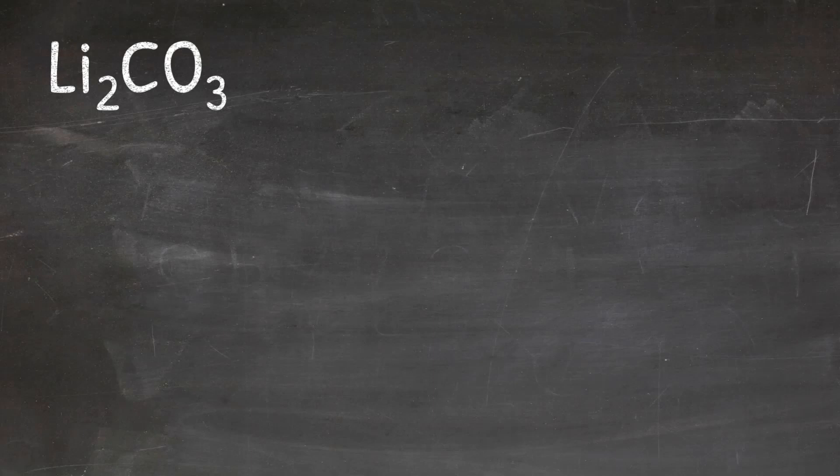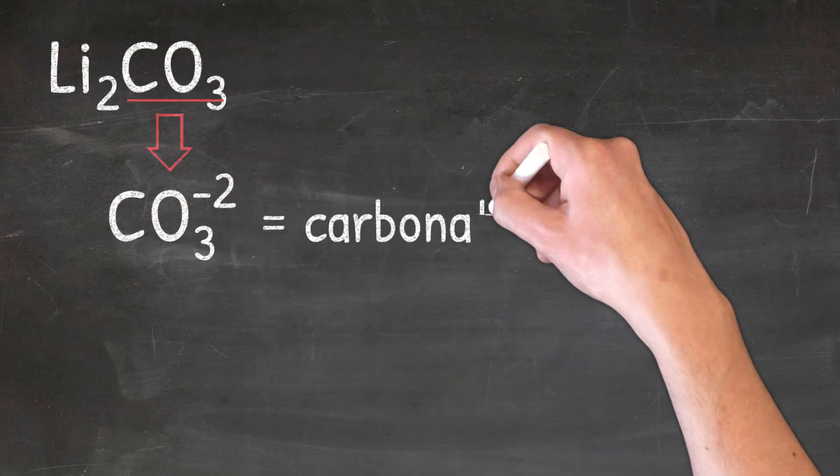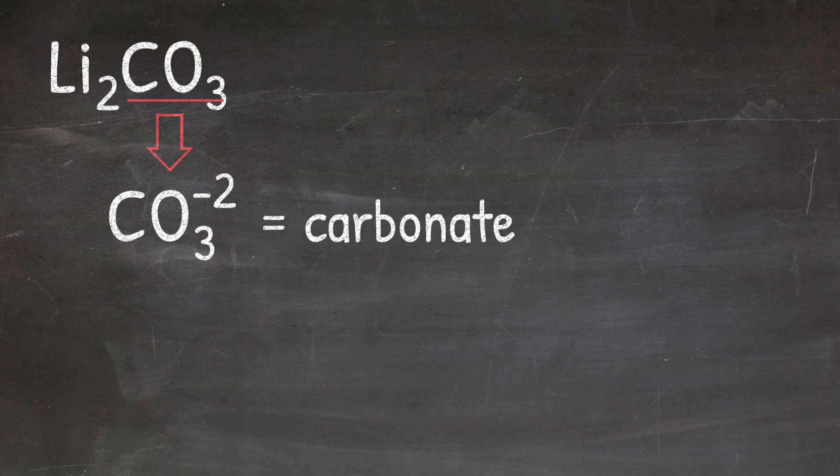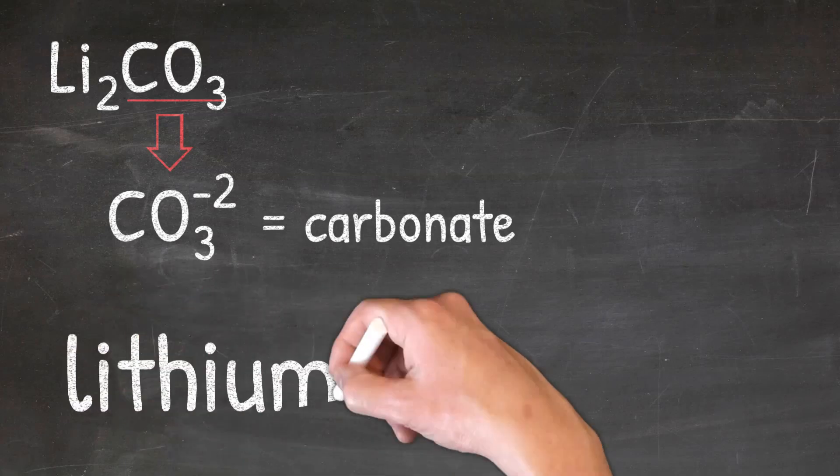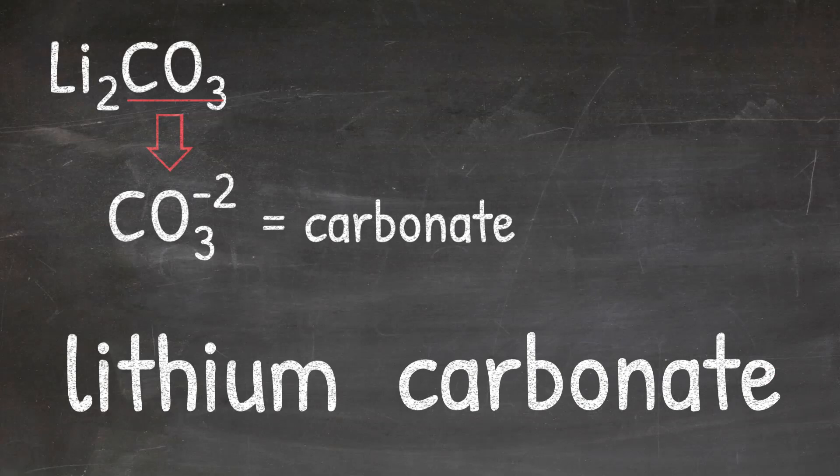The polyatomic ion present here is CO3 minus two, which is carbonate. So the first element Li is lithium, so I'll write lithium. And then the second part is not an element, but a polyatomic ion. And that polyatomic ion will keep the name the same, so I'll write carbonate. So the name of Li2CO3 would be lithium carbonate.